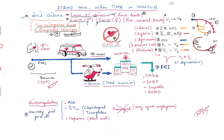There might be an artifact, the patient might be moving, and there might be a change in the baseline where the ST segment may appear elevated. But by definition, you have to have 1 mm ST elevation in the limb leads, 2 mm for male patients and 1.5 mm for female patients in the precordial leads, in two contiguous leads with reciprocal changes, and in three consecutive beats.